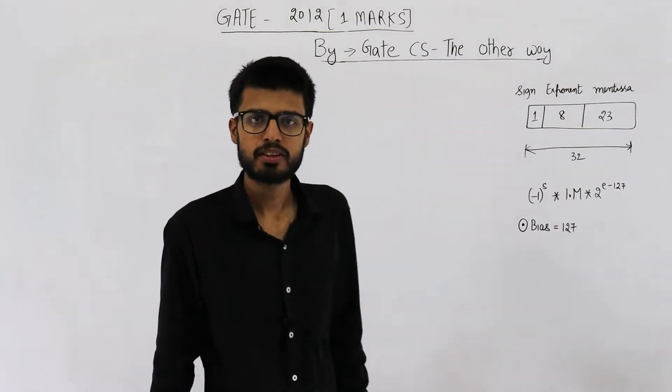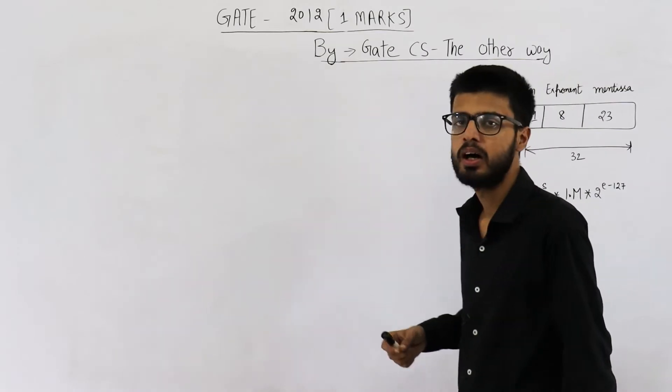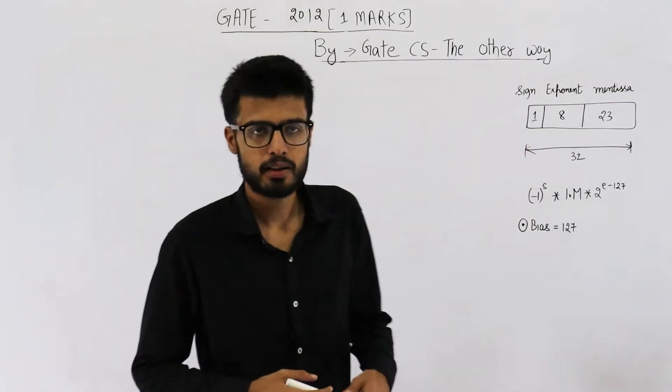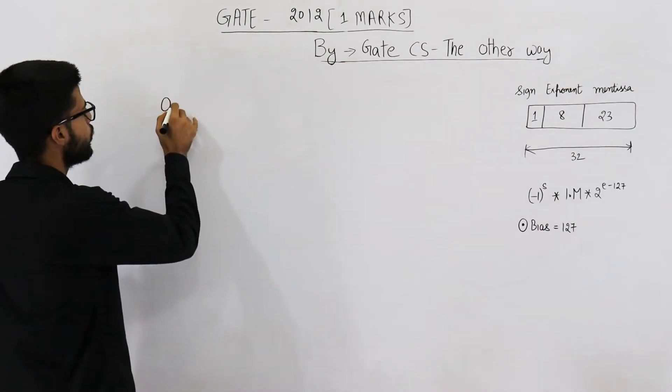Hello people, welcome back. This question is from GATE 2018 12 marks exam. It's for one mark. They are asking what is the IEEE single precision representation for 0.5. So 0.5.